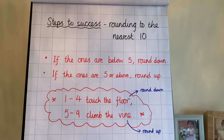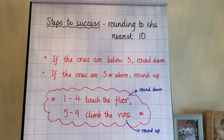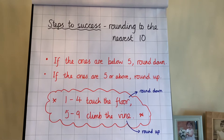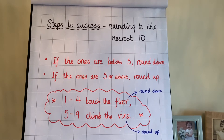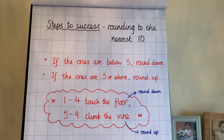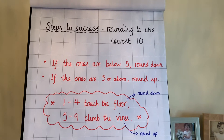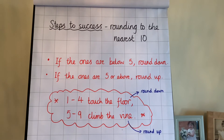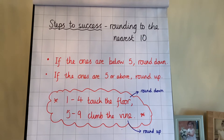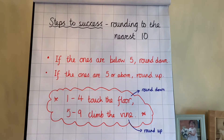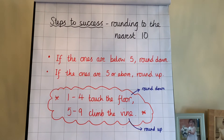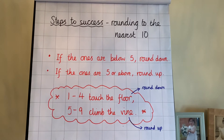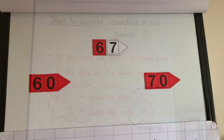Let's have a look at the steps to success for rounding to the nearest ten. If the ones are below five, you round down. And if the ones are five or above, you round up. Do you remember the rhyme? One to four, touch the floor. Five to nine, climb the vine. One to four, touch the floor means rounding down. And five to nine, climb the vine means rounding up.